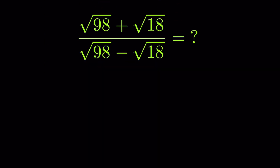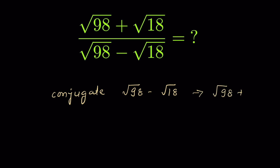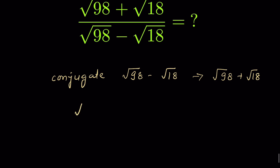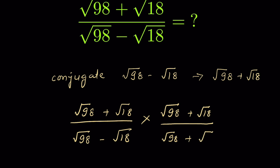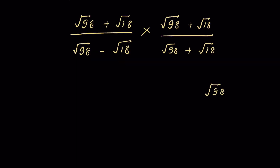In the second method, we rationalize the denominator. To do this, we multiply and divide by the conjugate of the denominator. The conjugate of (√98 − √18) is (√98 + √18). So we multiply (√98 + √18) / (√98 − √18) by (√98 + √18) / (√98 + √18).